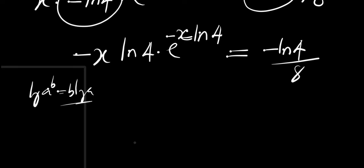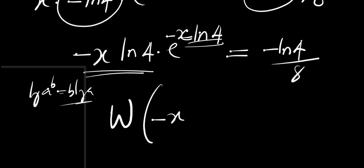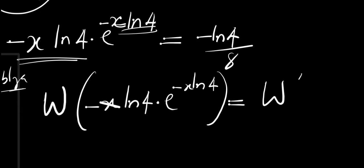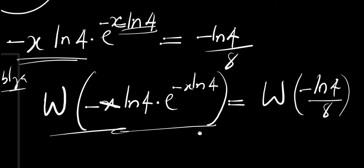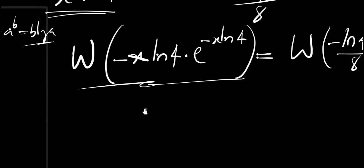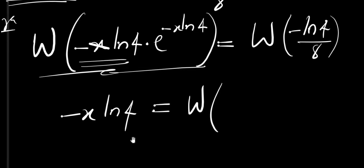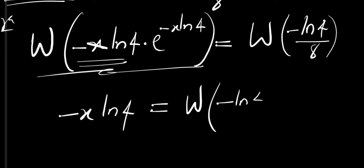Now we can apply the Lambert W function because what we have in the argument matches the required form. We take the Lambert W of negative x·ln(4) times e^(negative x·ln(4)), and this equals the Lambert W of negative ln(4) divided by 8. Because of the Lambert W function, the left side simplifies to just negative x·ln(4).